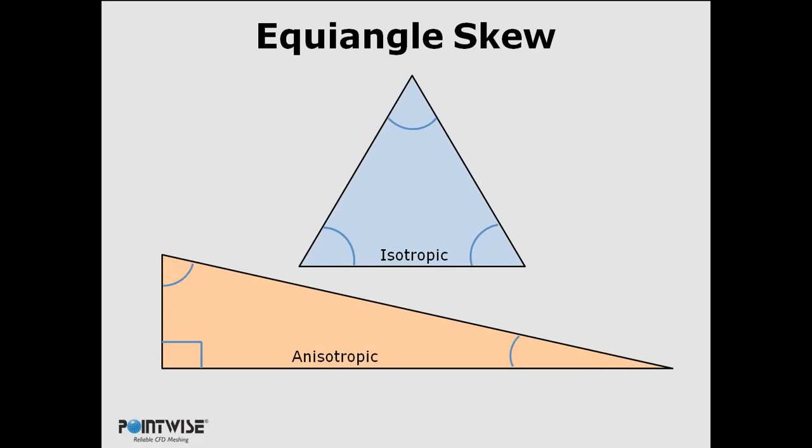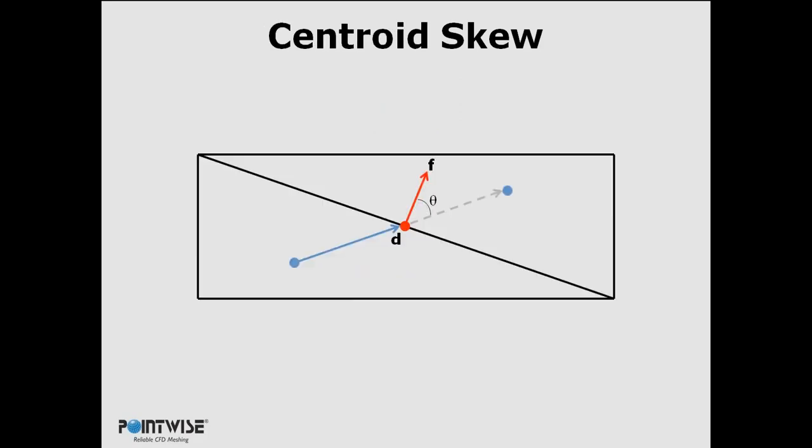Centroid skew looks very familiar, very similar to orthogonality. It's computed on a cell-by-cell basis, and basically it's kind of the angular deviation between that vector connecting the cell center to the face center and the face-normal vector. And for some applications like this where you've got two right-angled triangles, if you extend that vector to the adjacent cell center, it's equivalent to orthogonality.